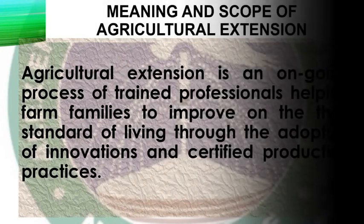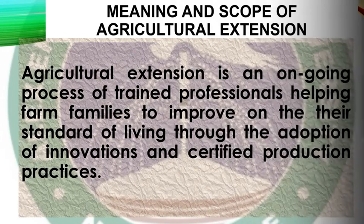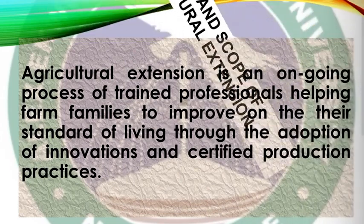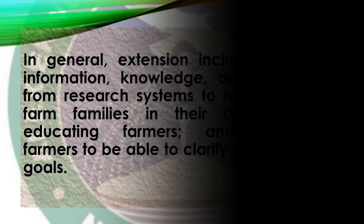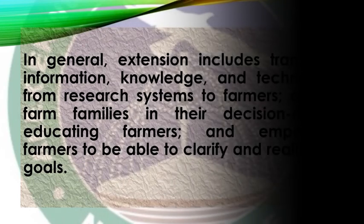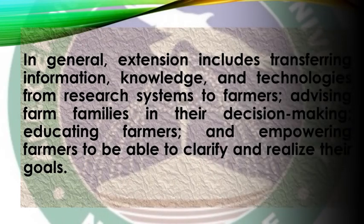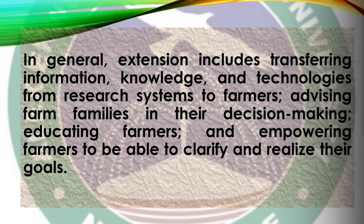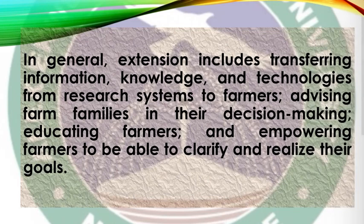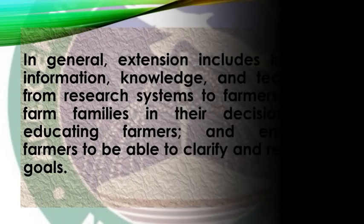In general, extension transfers information, knowledge, and technologies from research systems to farmers. Extension is that agency, that structure that advises farm families, equips them with better information and ideas to facilitate optimal decision-making, and empowers farmers to clarify and realize their goals.